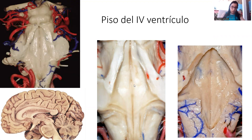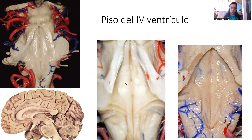This is a dorsal view of the fourth ventricle, seeing the fourth ventricle from behind. This is the superior cerebellar peduncle. This is the middle cerebellar peduncle. We have this median sulcus that divides the floor of the fourth ventricle into the right and left parts that are symmetric.